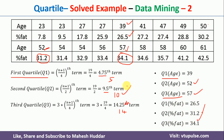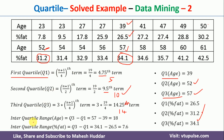Now that we have calculated the quartile terms, we can find the interquartile range. The interquartile range of age is Q3 minus Q1, that is 57 minus 39, which equals 18. The interquartile range of percentage fat is Q3 minus Q1, which equals 7.6.